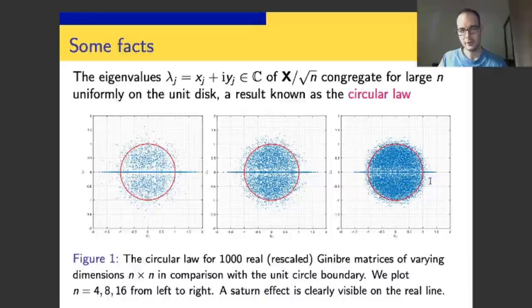The Saturn effect is a visually nice property, but it hints at serious technical difficulties when you're analyzing the fluctuations of the real eigenvalues around the boundary of the unit disk. And that's precisely what we did in our work with Jinho.